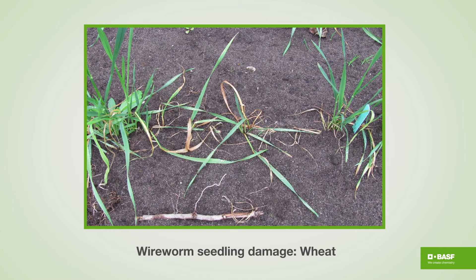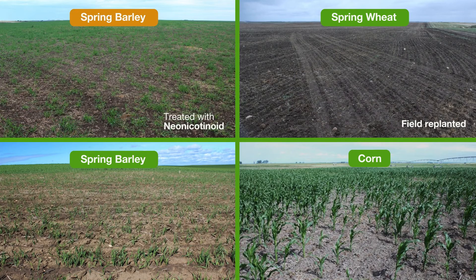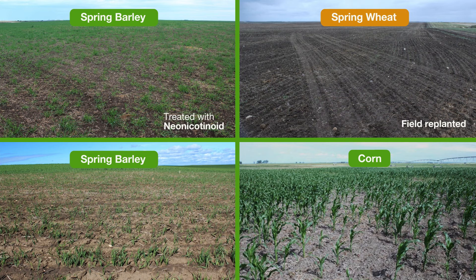This is what wireworm seedling damage looks like in wheat. These are month-old wheat seedlings that have been decimated by wireworm feeding below ground. In fields that have really high populations, the fields can be wrecked. This is a field of spring barley that was even treated with a neonicotinoid — it's virtually decimated. This field of spring wheat had to be replanted. Another spring barley field is severely thinned, and they also go after corn and other crops.